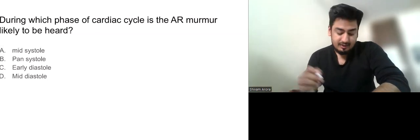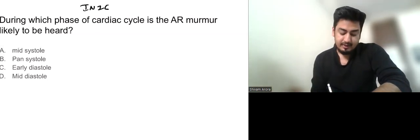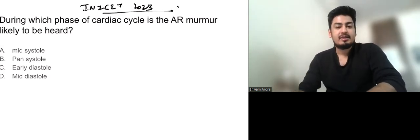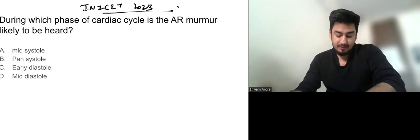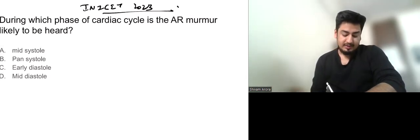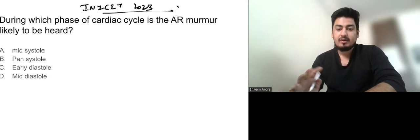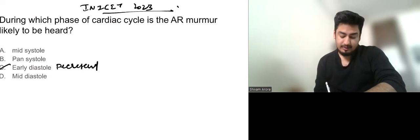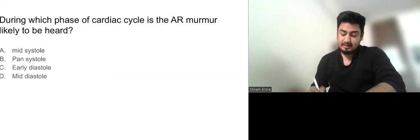This is the third question. This question again came in INICET 2022. The question reads: during which phase of cardiac cycle is the AR murmur not likely to be heard? Mid systole, pan systole, early diastole, mid diastole. So you all know that the murmur of AR is an early diastolic decrescendo murmur. This is the concept basically.